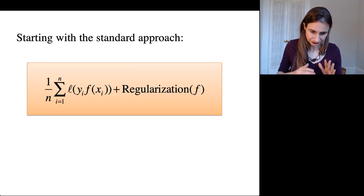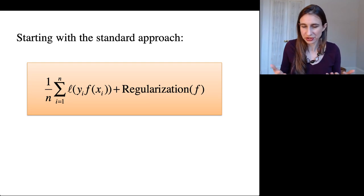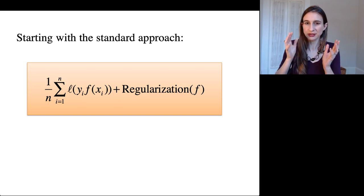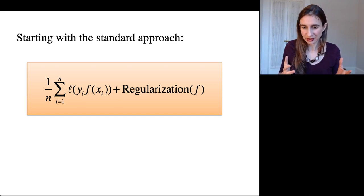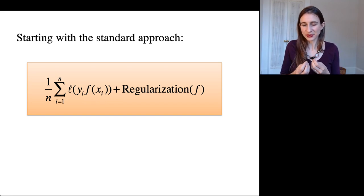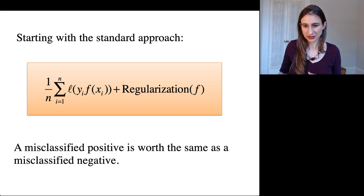So the way we usually set up a loss function or a risk functional in machine learning is we have a loss function and a regularization term. And the loss function is the same for all the data points. A loss for one data point is comparable to a loss from another data point. And so a misclassified positive, that's worth the same as a misclassified negative.